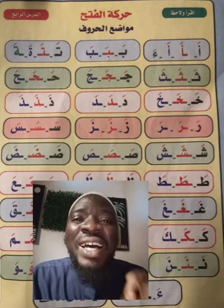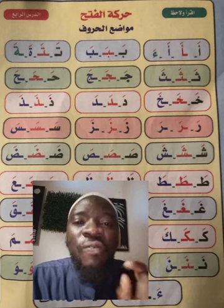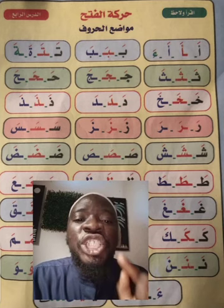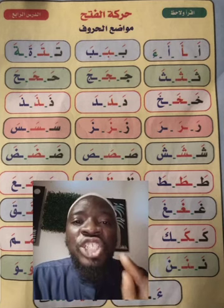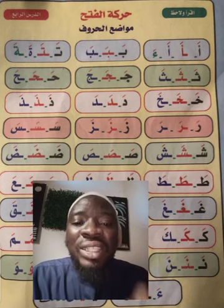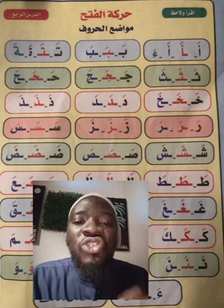Then after that you have Sin and Shin. They look alike — the difference is that Sin has no dot while Shin has three dots. You can see Sin: at the beginning, at the middle, at the end. Sin with Fathah: SA, SA, SA. Then Shin with Fathah: SHA, SHA, SHA.